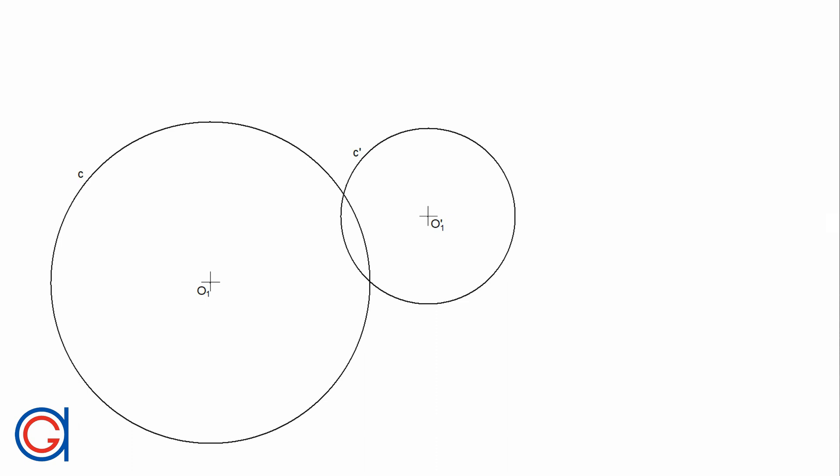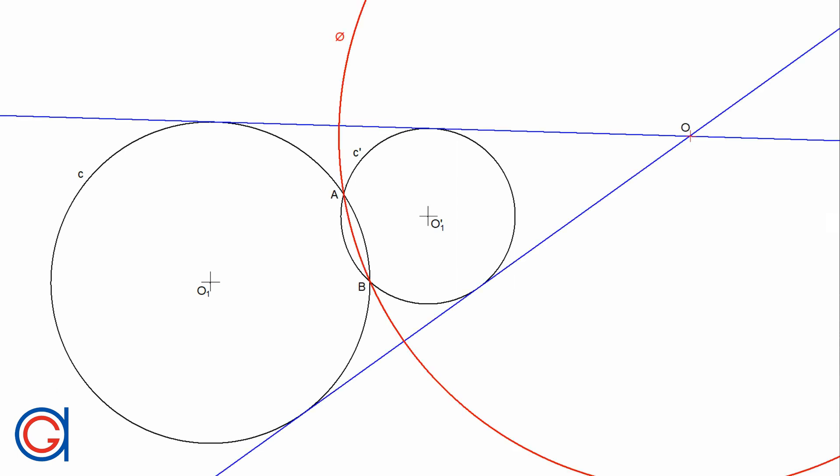Hello, today we are going to learn about mid-circles. A mid-circle of two given circles is the circle which would invert each of the two given circles into the other. The mid-circle acts like a spherical mirror which you can see the image distorted.